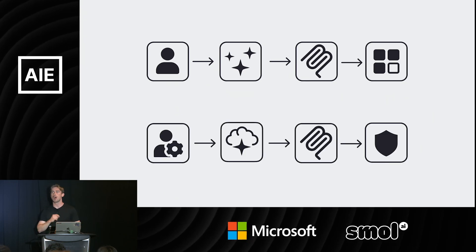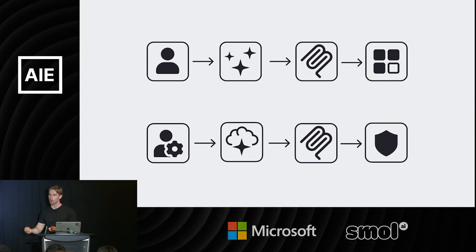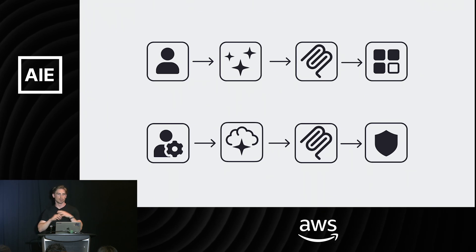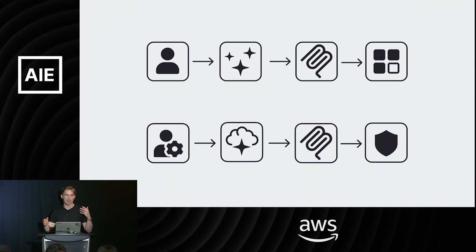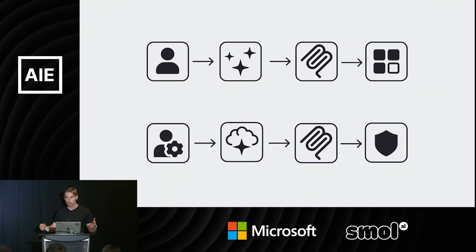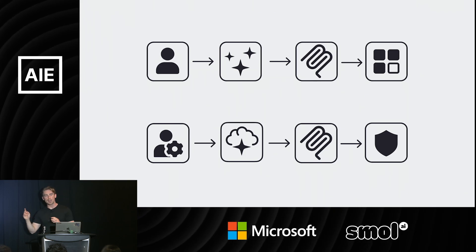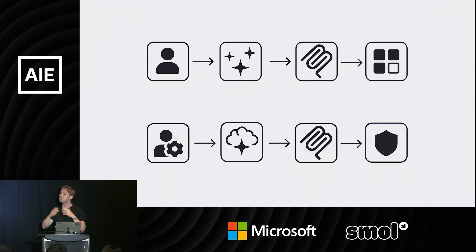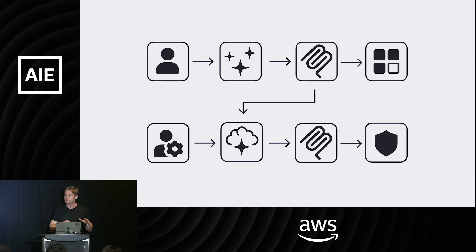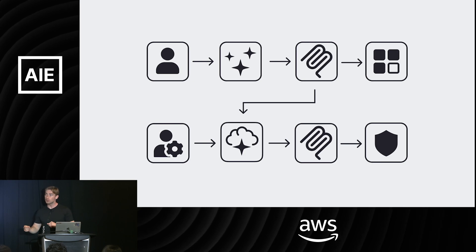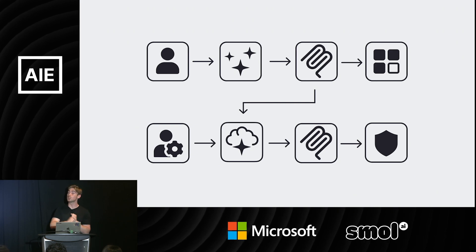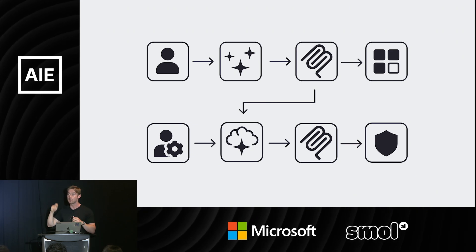We're also seeing workloads where an IT admin spins up an asynchronous workflow — what we call an AI agent — which automates some headless process, and is then going to use MCP to access external tools that might be secured or internal enterprise tools. There's also the scenario of users in a company using their chatbot, which makes a call to an MCP server, which then queries an AI agent existing in the cloud performing some operation.